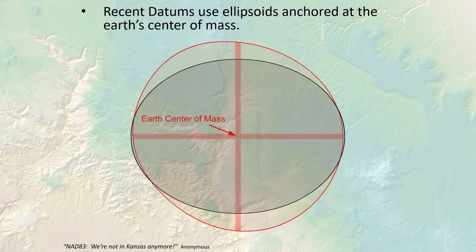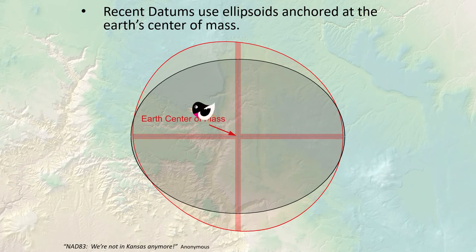For example, the North American Datum of 1927 uses the Clarke 1866 ellipsoid, oriented and positioned so it's anchored to a spot in Kansas. Other datums for other parts of the world use different ellipsoids with different orientations, anchored at different parts of the world. The size of the ellipsoid and anchoring method generally makes it work well in one area but causes distortion elsewhere. In recent decades we've become more interested in datums that can be used globally.